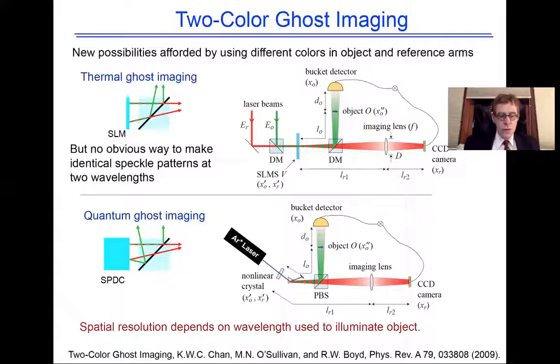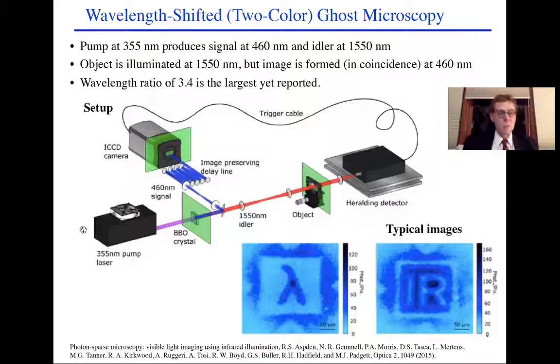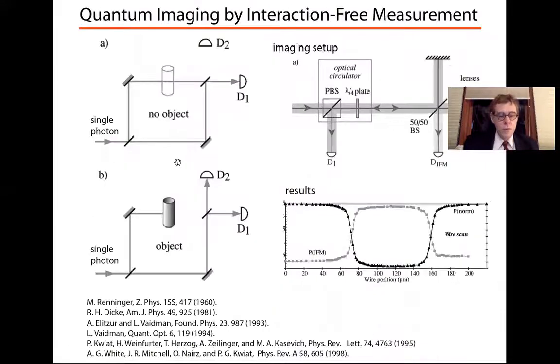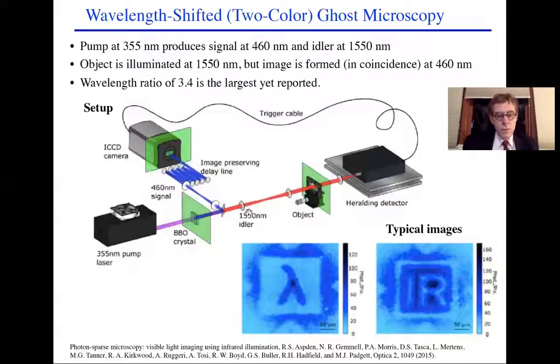I worked on this project with Miles Padgett. We collaborate on many things. Here's the project that we worked on. The pump laser works at 350 nanometers. We produce, by down conversion, a signal at 460 and idler at 1550 nanometers. Dichroic beam splitter here. We take the blue photon. We send it through an image-preserving delay line. We take the red photon. It passes through the object and falls onto a detector.